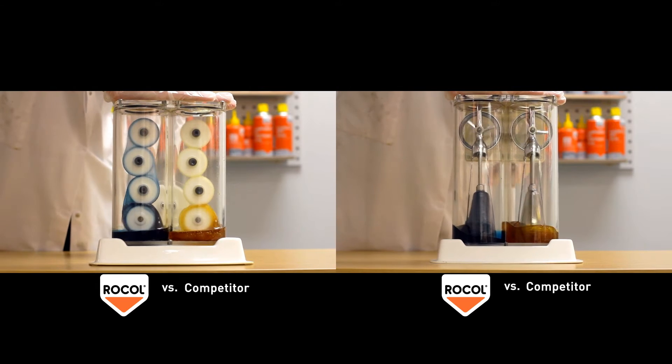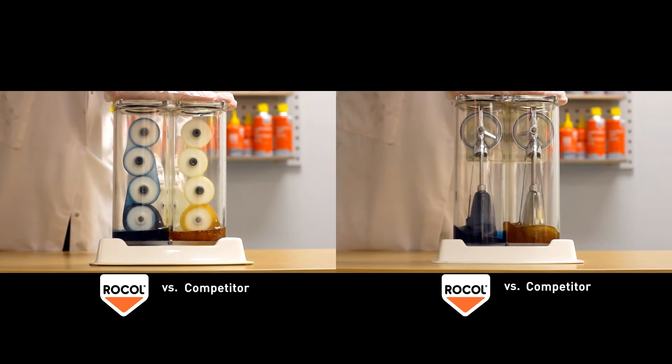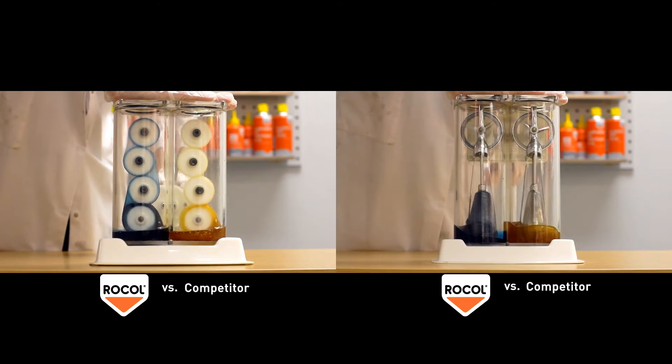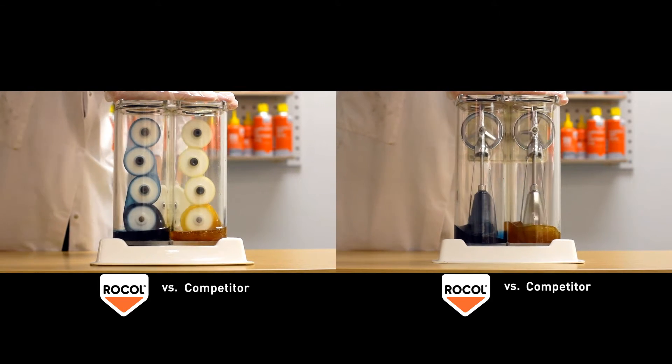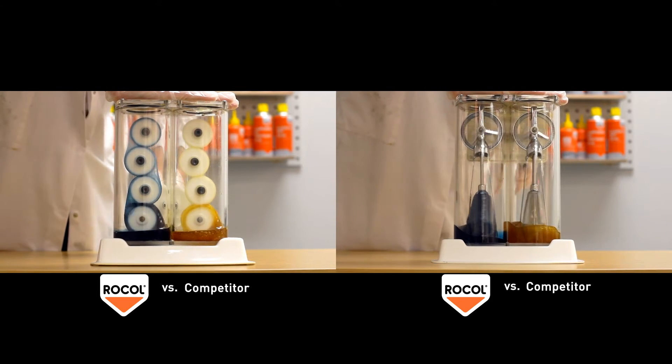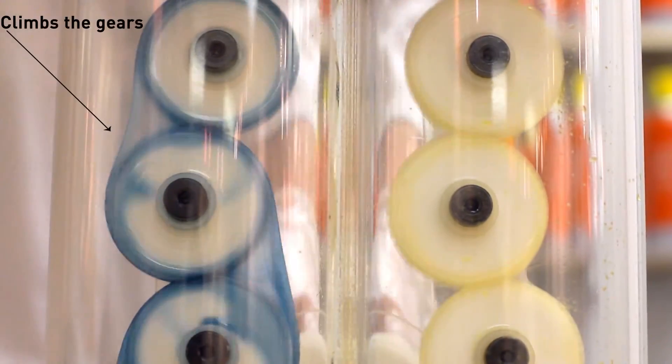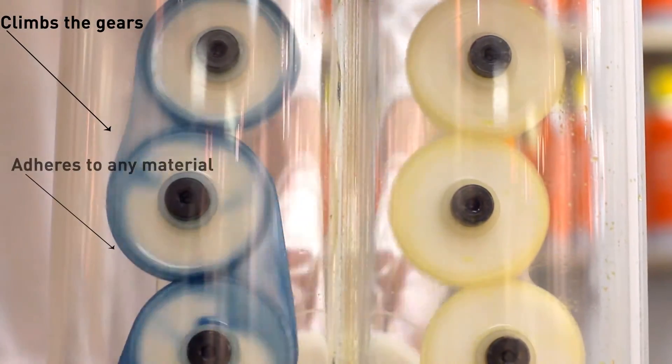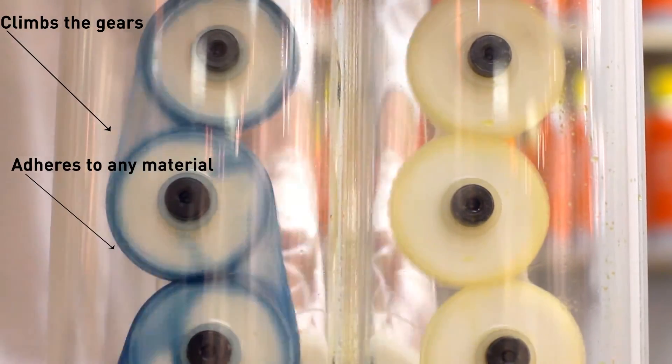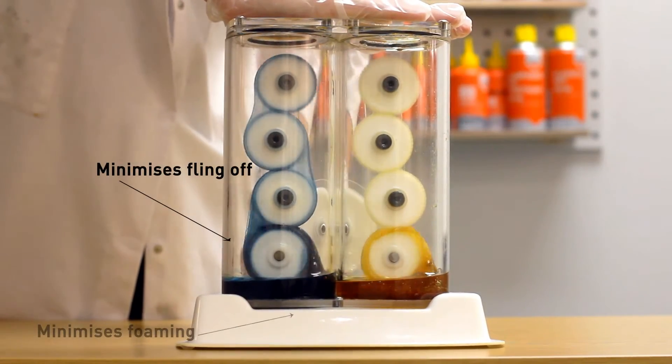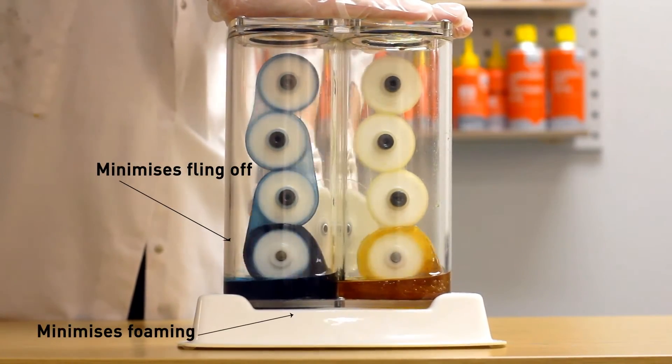We have devised two demonstration mechanisms to resemble the working conditions of a gearbox. Observe in both cases how the Roco Gear Oil with the Startup Protection System lubricates from startup, climbs the gears, adheres to any material, minimizes fling off, and minimizes foaming. Both oils shown have an ISO viscosity rating of 220.